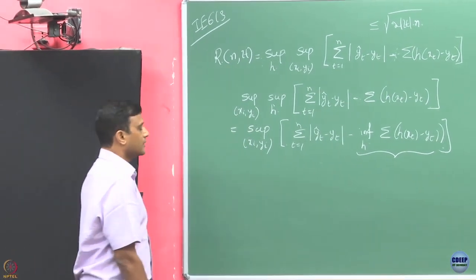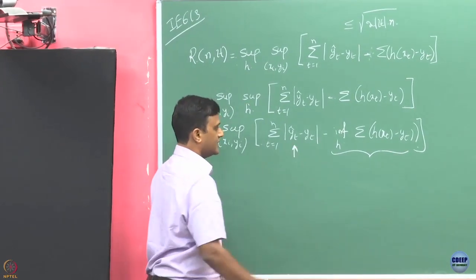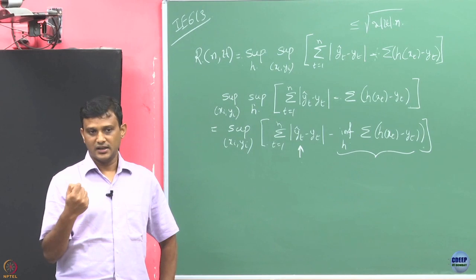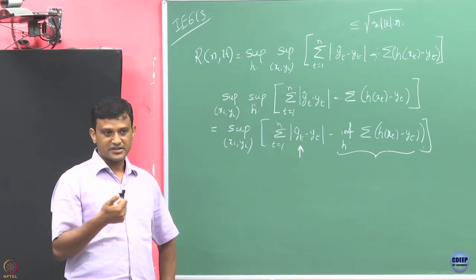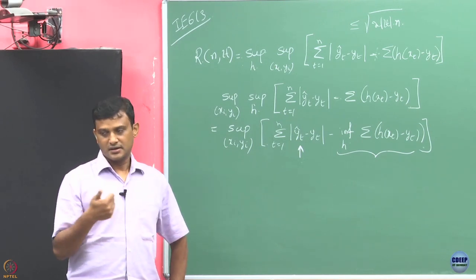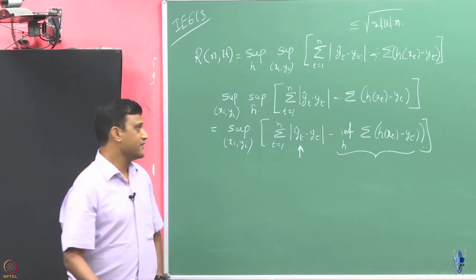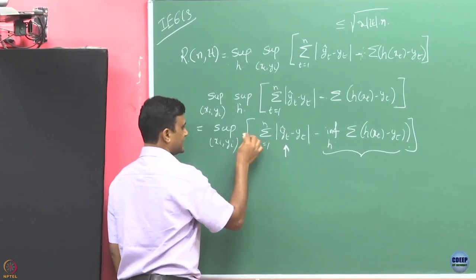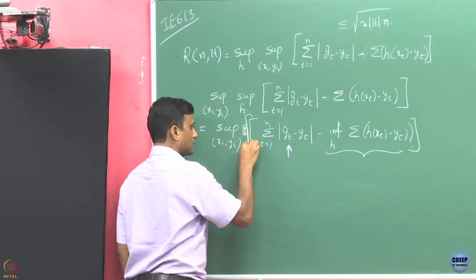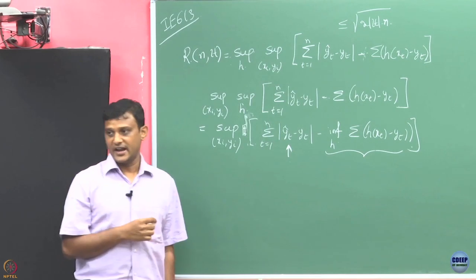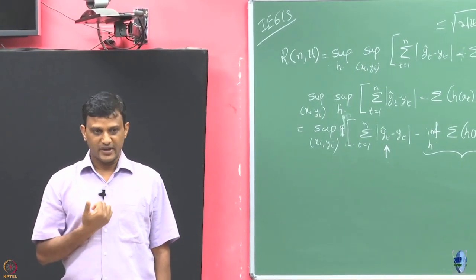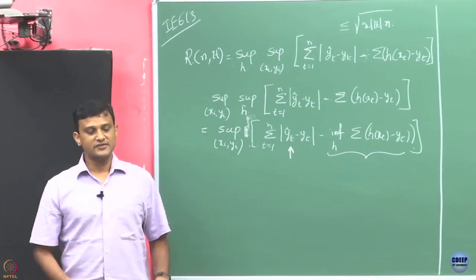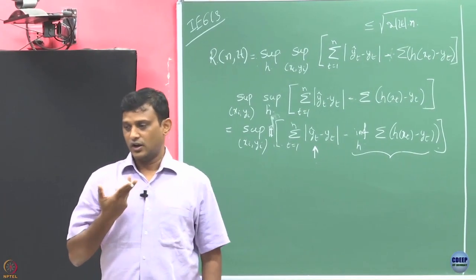Another thing we noted: y_t, the prediction given by the learner in round t, need not be deterministic. If the learner gives a deterministic prediction, they can be made to err in every round. So we allowed y_t to be random, and considered the expected regret. This was the full information setting setup we had looked into.